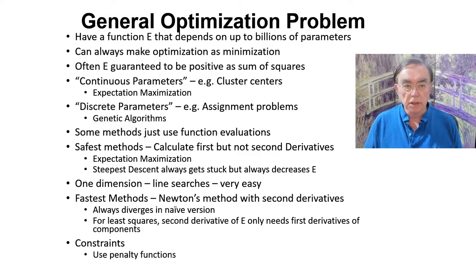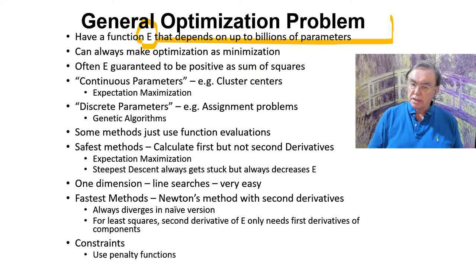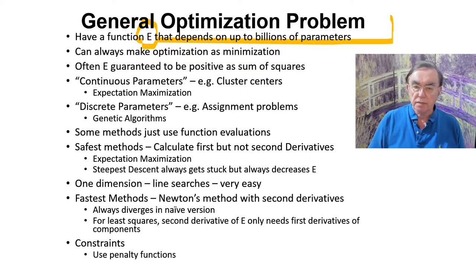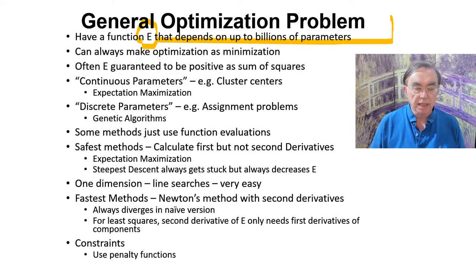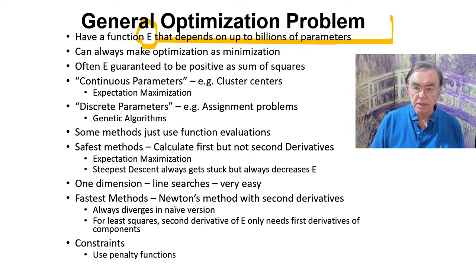If we look at general optimization problems, they start off with a function E. I use E because E sometimes stands for energy, and energy is always being minimized by nature. So optimization problems have a strong physics flavor to them from time to time.